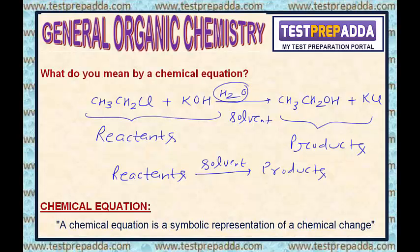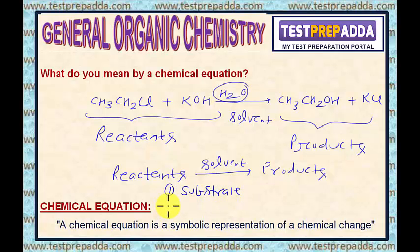If you analyze different organic reactions, you will find that there are two types of reactants: number one, substrate, and number two, reagent.